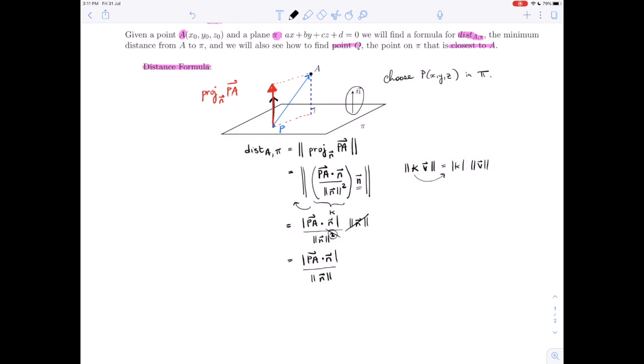We end up with the absolute value of PA dotted with N divided by the norm of N. We can go a little bit further. We know that A is the given point (x0, y0, z0), and P was our point that satisfied the equation of the plane, so it was (x, y, z). So we can write this as the absolute value of PA, which is (x0 minus x, y0 minus y, z0 minus z) dotted with (A, B, C), divided by the norm of N, which is the square root of A squared plus B squared plus C squared.